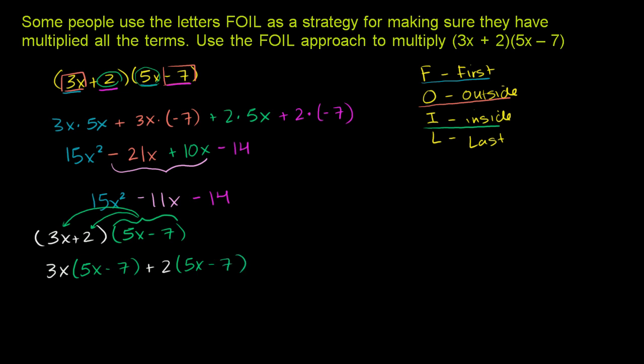And then this gives us 3x times 5x is going to be 15x². 3x times negative 7 is going to be negative 21x. And remember, this step we're just applying the distributive property again.